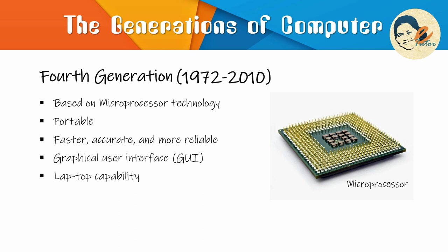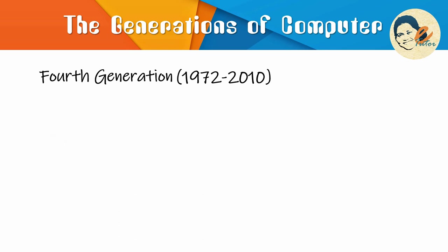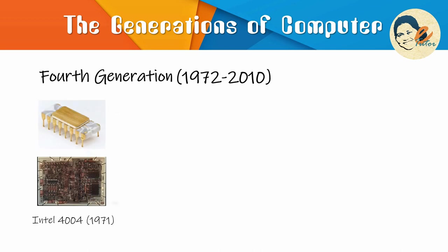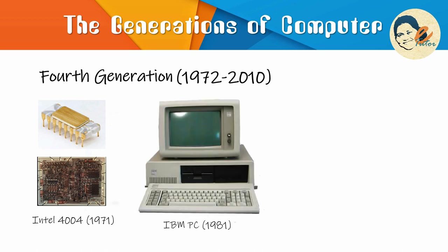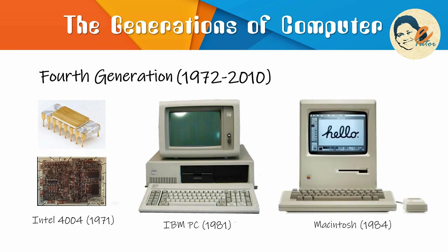This evolution can be summed in one word: Intel. The chip maker developed the Intel 4004 chip in 1971, which positioned all the computer components — CPU, memory, and input-output controls — onto a single chip. In the year 1981, IBM introduced the first computer specifically designed for home use. And in 1984, the Macintosh was introduced by Apple.